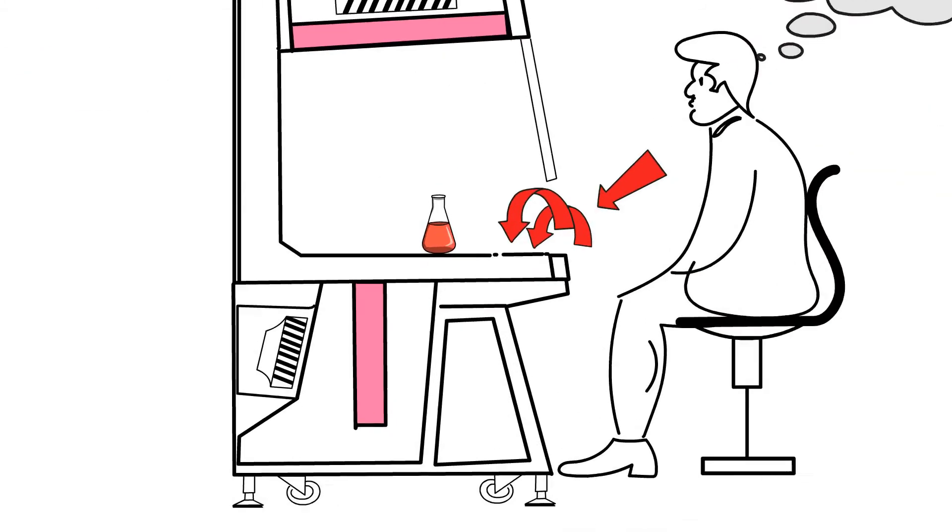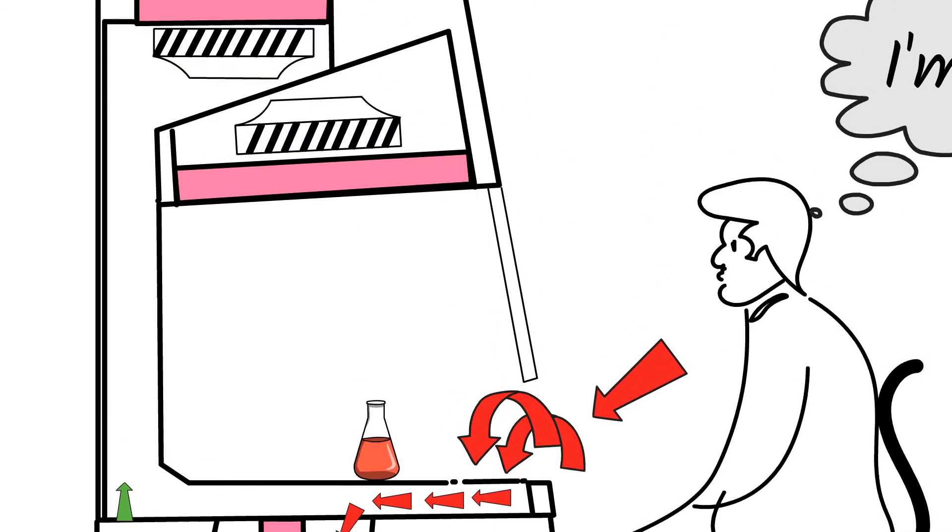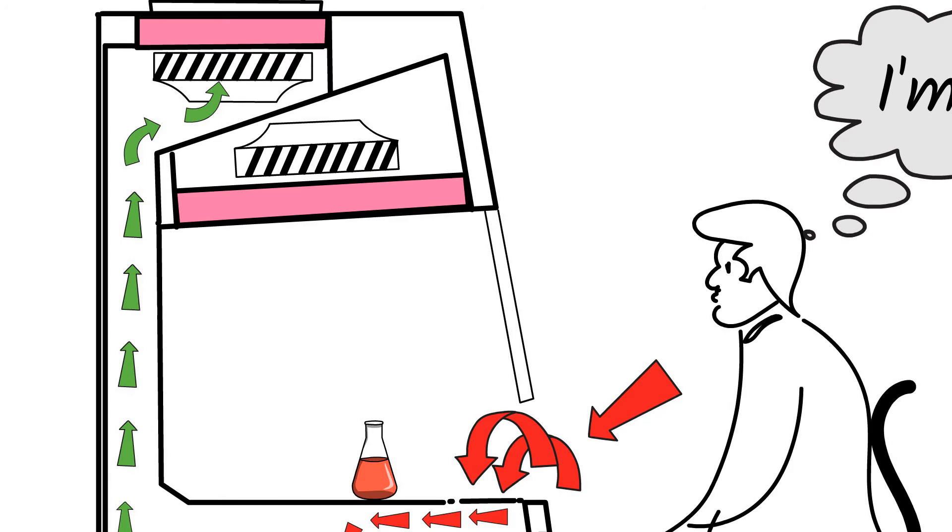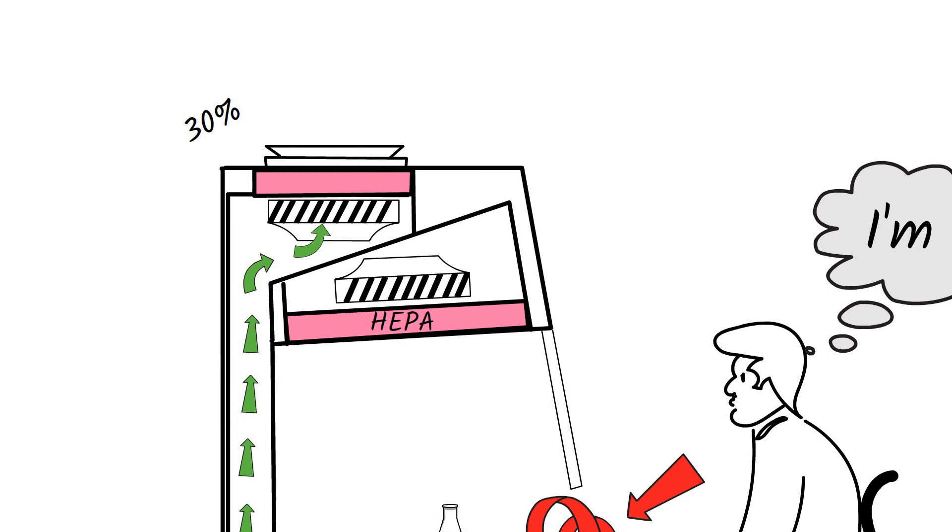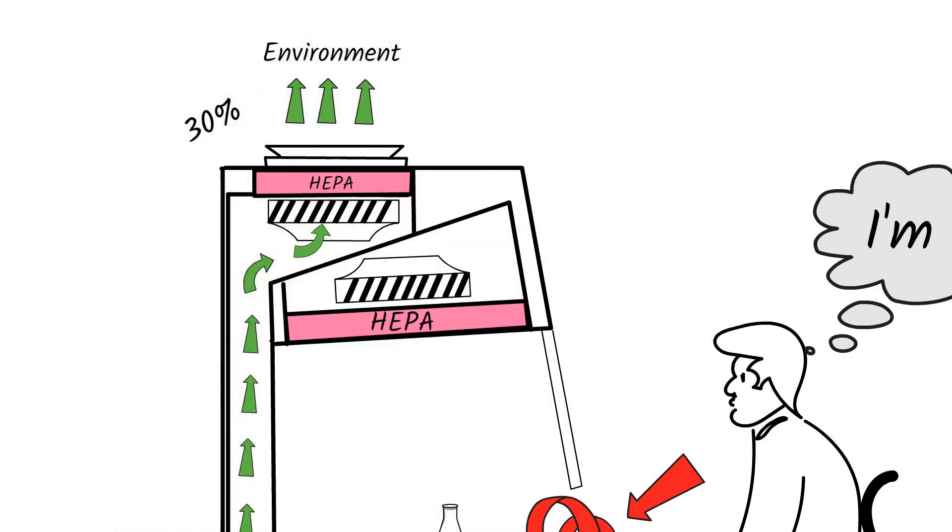The contaminated air is then pushed below the workbench and taken upwards to the plenum. From the plenum, the air is passed through the HEPA filter. Usually, 30% of the air will be sent back to the environment through the HEPA filter. The remaining 70% of the air passes through another HEPA filter and enters the working surface of the cabinet.